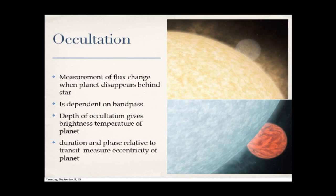The depth of the occultation gives an estimate of the brightness temperature of the planet — I use brightness temperature rather than effective temperature because you're measuring the temperature seen in a specific bandpass, which can change a lot between optical and infrared. The duration and phase also give a measurement of the eccentricity: if the occultation appears at phase 0.5, the orbit is likely circular; if it shifts, that indicates eccentricity.